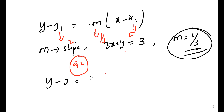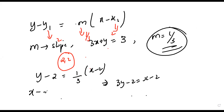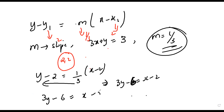So 3y - 6 = x - 2, which gives x - 3y + 4 = 0, or x - 3y = -4. To find the y-intercept, divide everything by -4: x/(-4) + y/(4/3) = 1. This is the intercept form x/a + y/b = 1. So the y-intercept b = 4/3. Thank you Rhea for the correction on the constant.